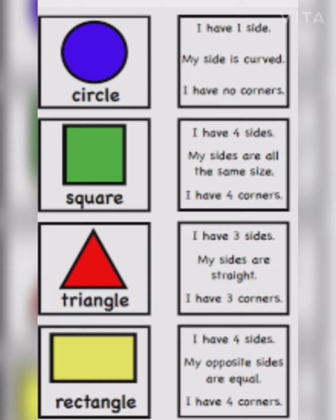Attributes of 2D shapes. Circle: no faces, no corners. Square: four sides, four corners. Triangle: three sides, three corners. Rectangle: four sides, four corners, opposite sides are equal.